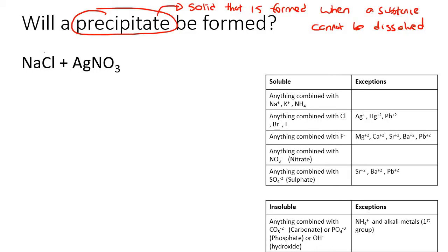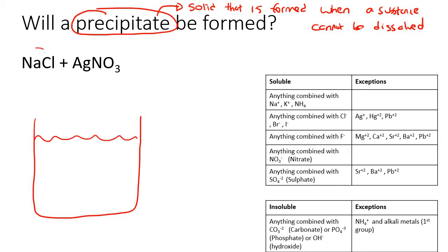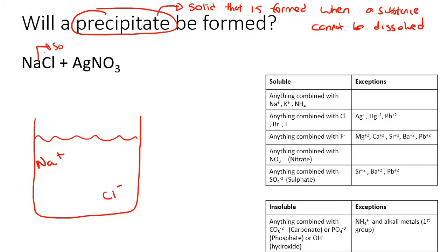So we're going to throw some NaCl into a glass of water. Na and Cl — will this be soluble? We know that anything combined with Na is soluble and there is no exception to that rule. So this will be soluble and it will separate into Na⁺ and Cl⁻. Obviously there are millions of them but I'm just showing it like that. So that was soluble.